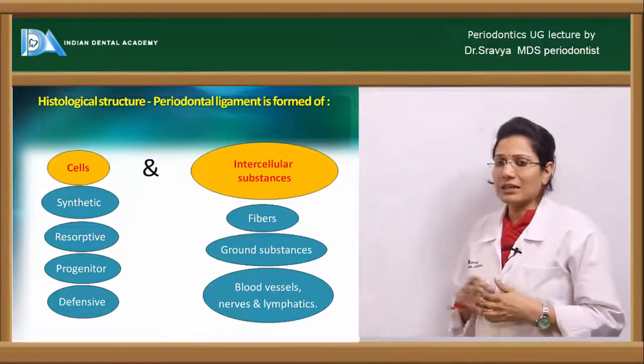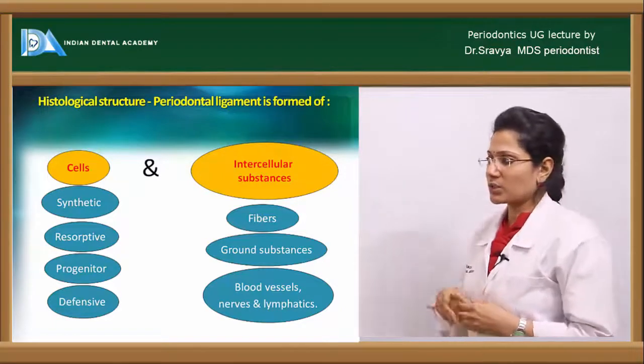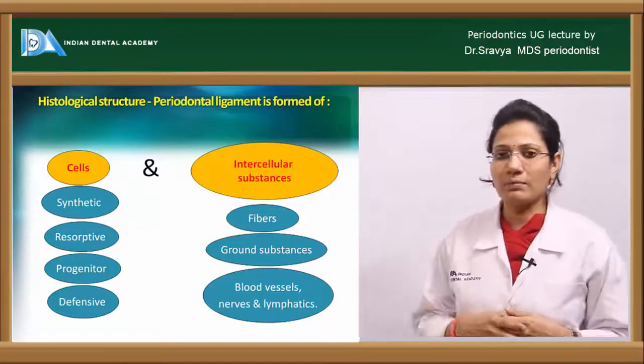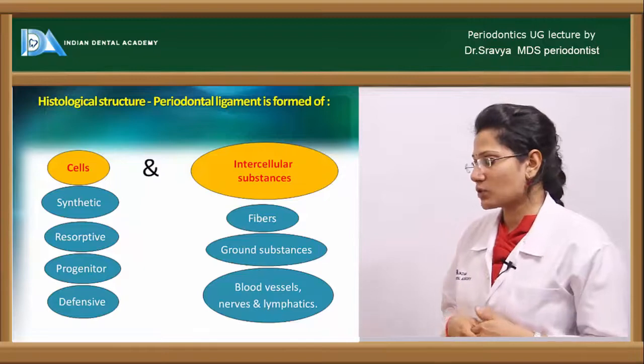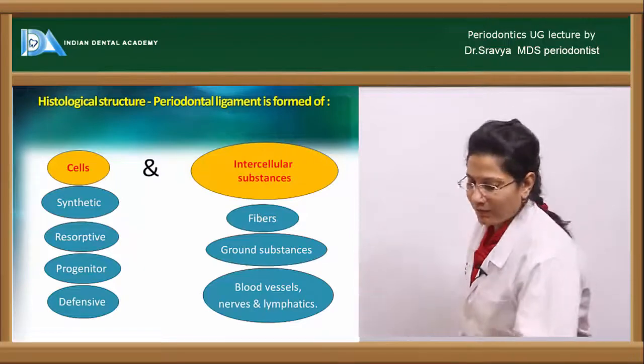The intercellular substances include fibers, ground substance, blood vessels, nerves, and lymphatics.